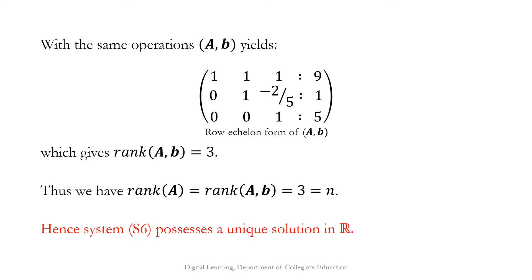Applying the same elementary row operations, the augmented matrix [A|b] reduces to the matrix with entries 1, 1, 1, 9; 0, 1, −2/5, 1; 0, 0, 1, 5. This is in row echelon form with 3 non-zero rows, so rank([A|b]) = 3. Therefore rank(A) = rank([A|b]) = 3 = number of variables, so system S6 possesses a unique solution in the real number set. Geometrically, the three planes in R³ intersect at a unique point.